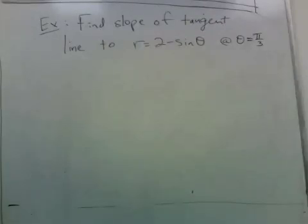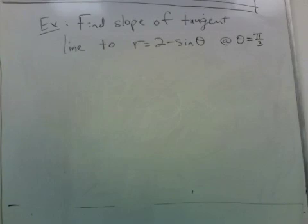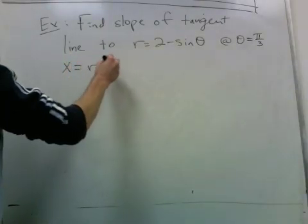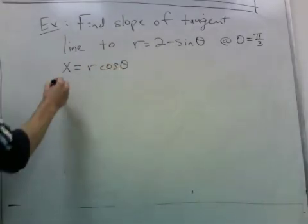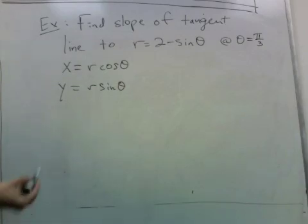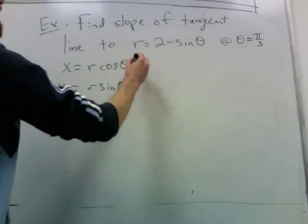Now let's try to do some calculus with polar coordinates. We want to find the slope of the tangent line to this curve at theta equals pi over 3. We can think of this in terms of parametric equations, because x is given by r cosine theta, and y is given by r sine theta, and we have an equation for r in terms of theta.